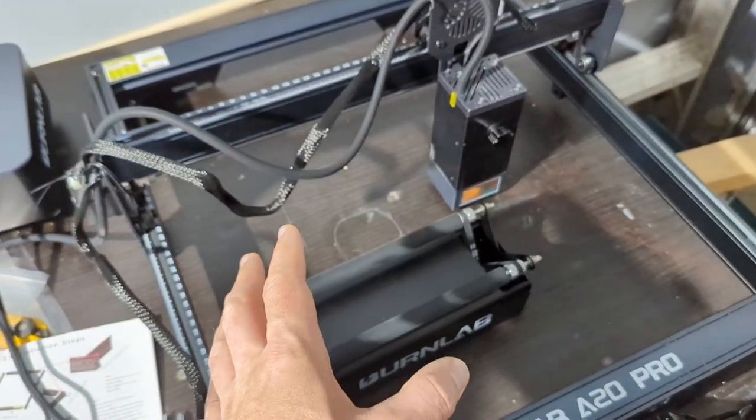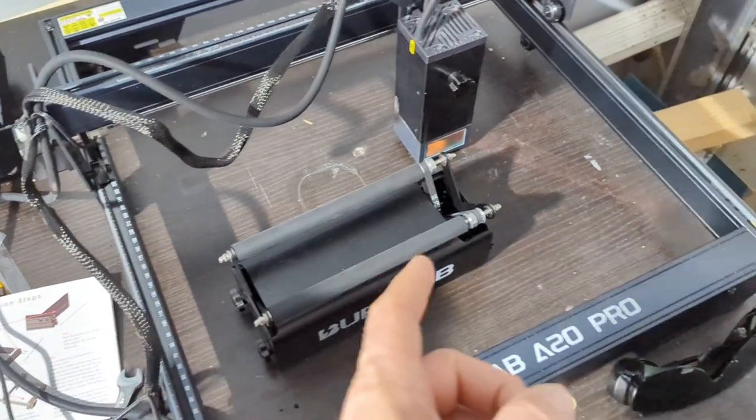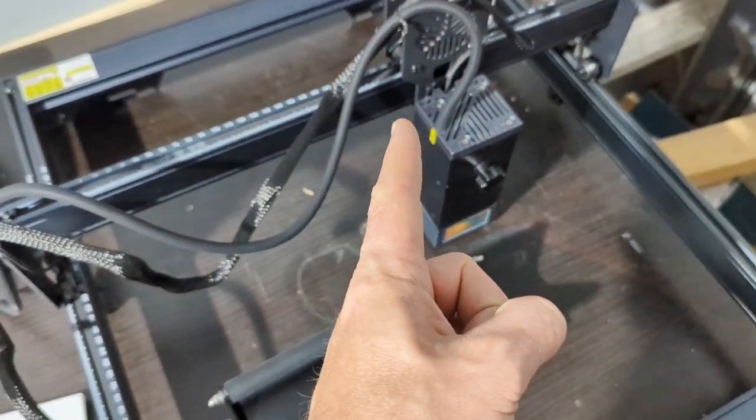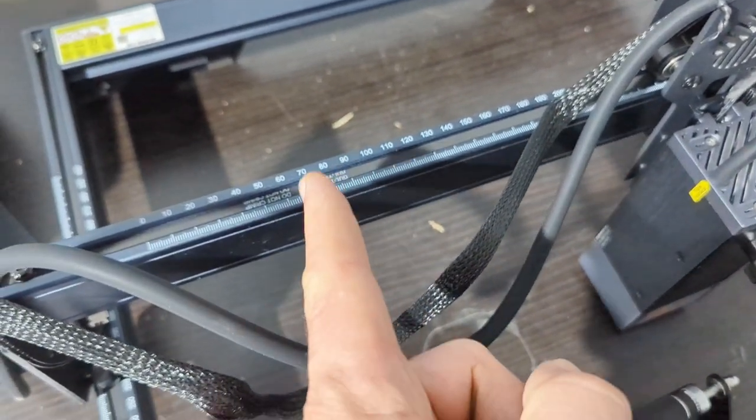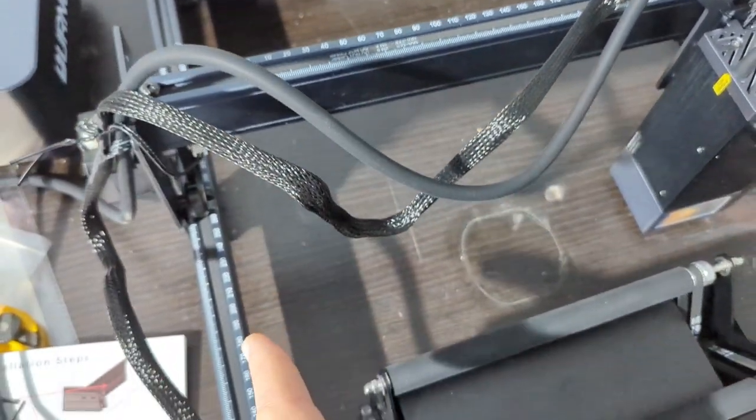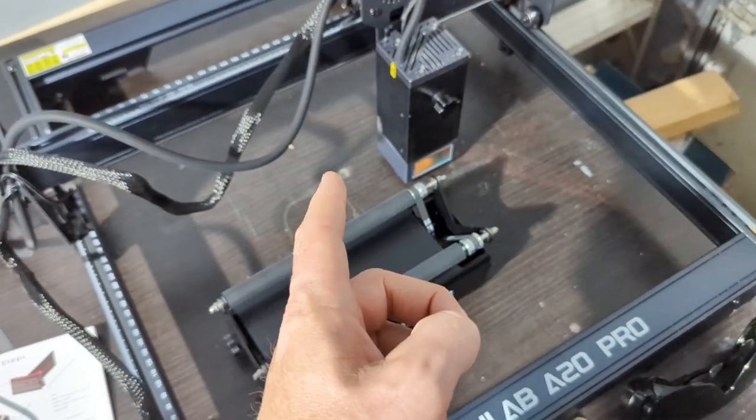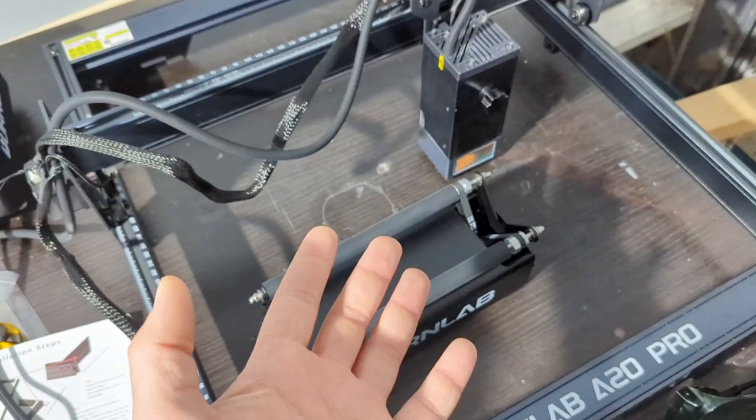So as I pointed out, it doesn't have all the bells and whistles and sort of cooler stuff on it, but it's going to get the job done. We got 410 by 400 millimeter working space. You can see on here, it's got your measurements, so you can sort of keep track of how big your items are that you're putting in there. 20 watt laser. You can do a lot with that. Let's find out what we can do.